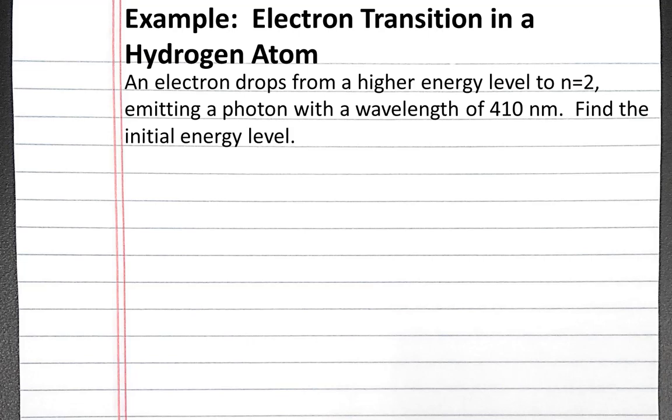In this sample problem, we'll look at the energy involved in an electron transition in the hydrogen atom. Our problem is: an electron drops from a higher energy level to n equals 2, emitting a photon with a wavelength of 410 nanometers. Find the initial energy level.